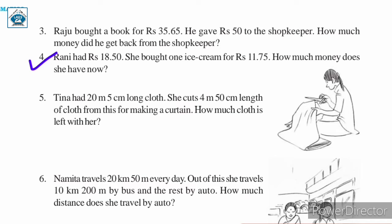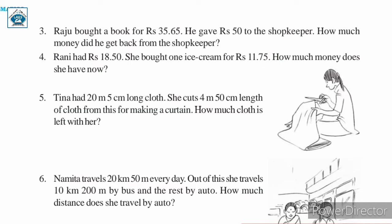Question number 4. Rani had Rs. 18.50. She bought 1 ice cream cone for Rs. 11.75. How much money does she have now? We are asked for the remaining balance. We will subtract the amount spent from the total, and then we will get the money she has now.